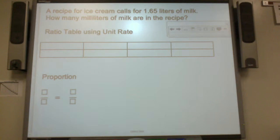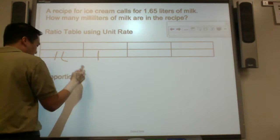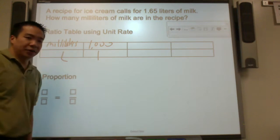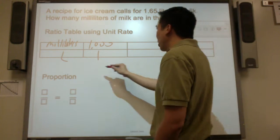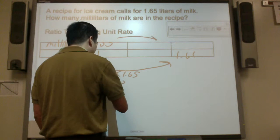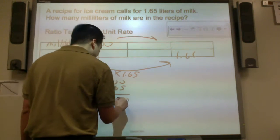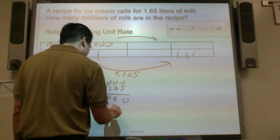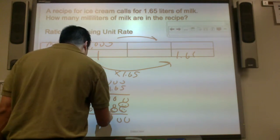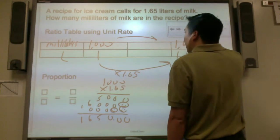A recipe for ice cream calls for 1.65 liters of milk. How many milliliters of milk are in the recipe? Let's write it as a unit rate. Look at your mathematics chart. It says 1,000 milliliters per 1 liter. I'll put 1.65 down here. How do I build up from 1 to 1.65? I scale forward by 1.65. So 1,000 times 1.65. I'm just going to multiply as I see it. Do you see how I put one placeholder here and a double placeholder here? There are two decimal places. So it's 1,650 milliliters.